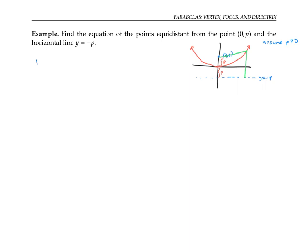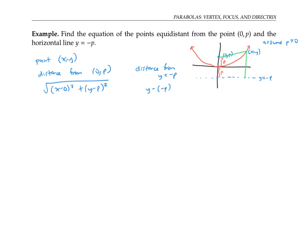If we take an arbitrary point with coordinates (x, y), its distance from the point (0, p) is given by the distance formula: the square root of (x minus zero) squared plus (y minus p) squared. Its distance from the line y equals negative p is just given by its difference in y-coordinates, so that's going to be y minus negative p, or y plus p.